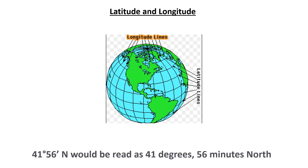Now let's look at how we read the latitude and longitude of any place. The first number is always the latitude and the second is the longitude. Latitude and longitude are broken into degrees and minutes. For example, an area with coordinates marked 41 degrees 56 minutes north would be read as 41 degrees 56 minutes north. This way of expressing coordinates helps in pinpointing exact locations on the Earth's surface.